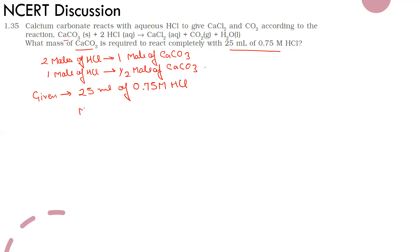Molarity equals number of moles divided by volume. This equals number of moles divided by 25 by 1000, which equals 0.75. From here, the number of moles is equal to 0.75 times 25 divided by 1000. This is the number of moles of HCl.